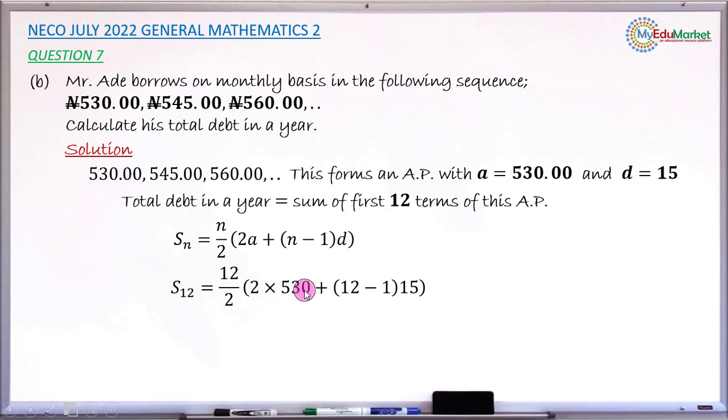The bracket is 2 multiplied by 530 plus another bracket open, inside you have 12 minus 1, that is n minus 1, then multiply the inner bracket by 15 which is your d.